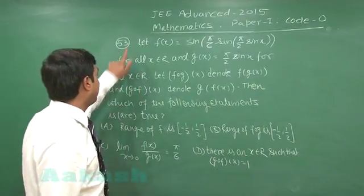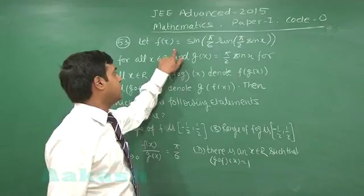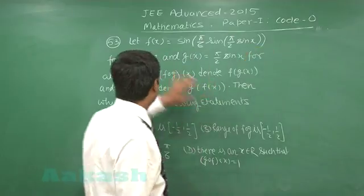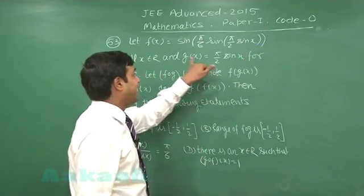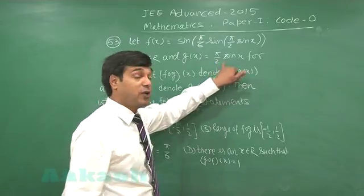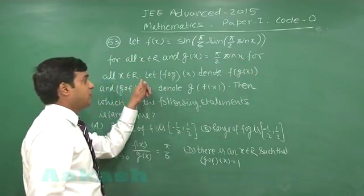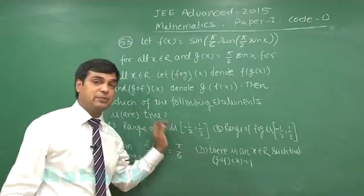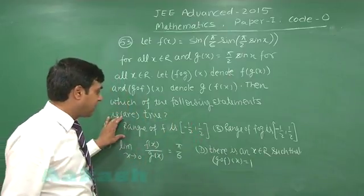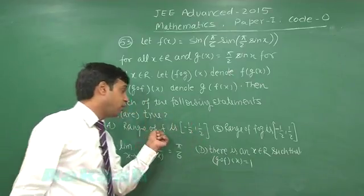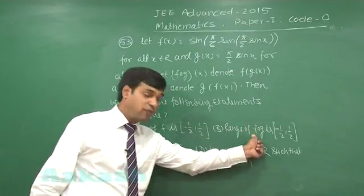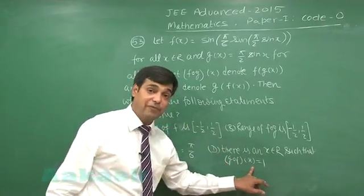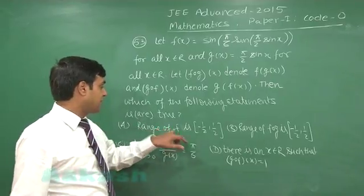Let us take question 53. Let f(x) = sin(π/6 · sin(π/2 · sin x)) for all x in the real numbers, and g(x) = π/2 · sin x for all x in the real numbers. The question asks about f∘g, g∘f, and which of the following statements are correct. Four options are given about the range of f, range of f(g), the limit of f(x)/g(x) as x→0, and g(f(x)).